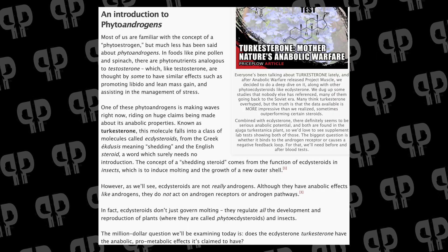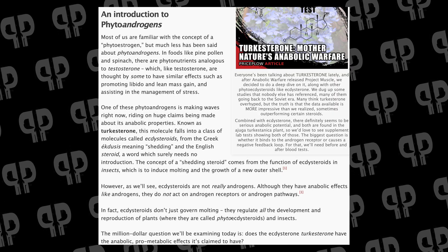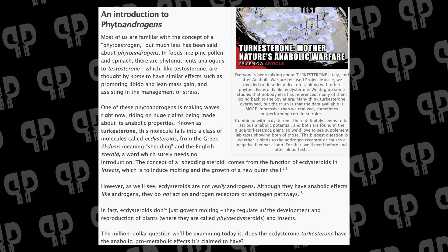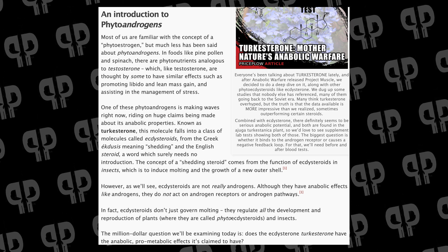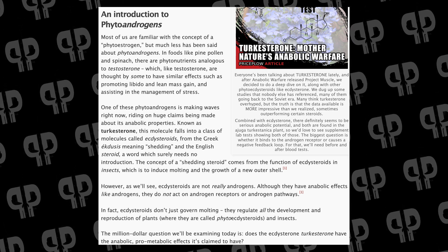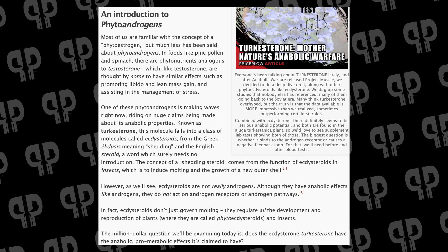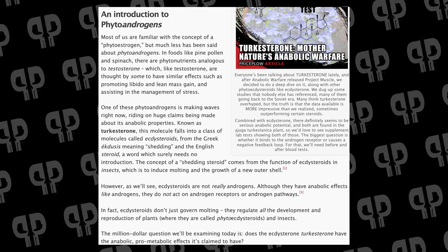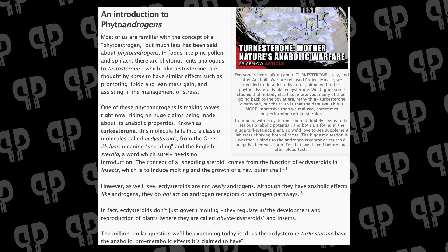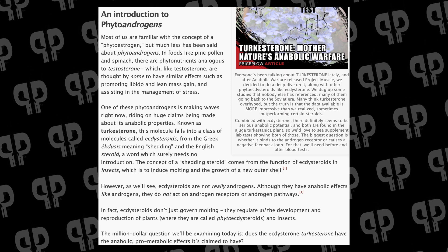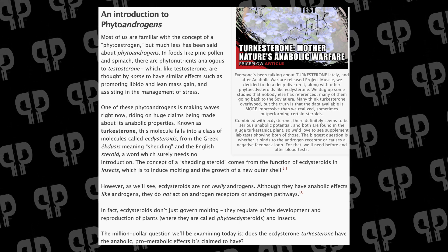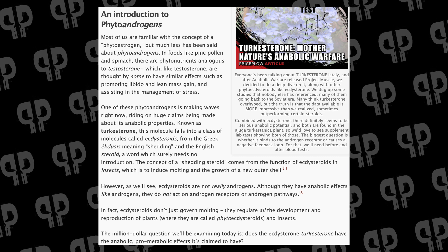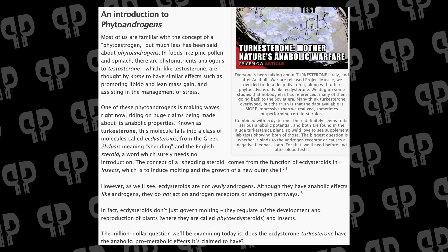We're going to start off with an introduction to phytoandrogens. Most of us are familiar with phytoestrogens, but we haven't talked much about phytoandrogens. In foods like pine pollen and spinach, there are phytonutrients which are analogous to testosterone — having effects on boosting libido, lean mass gain, and assisting in stress management. One of the big phytoandrogens making its way in the industry right now is Turkesterone.